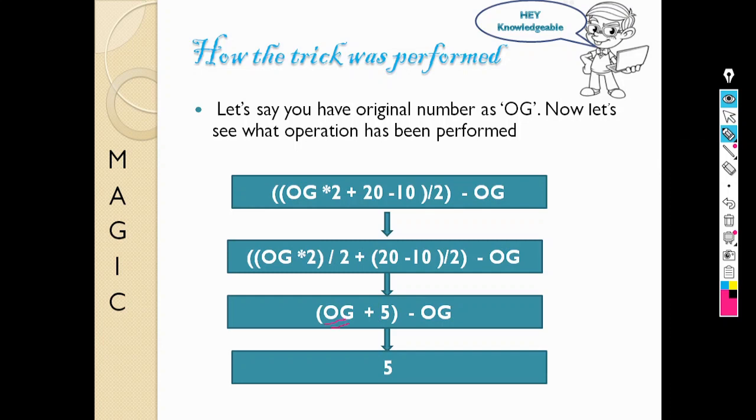So the trick is basically you have to do operations in such a way that the original number gets cancelled automatically. And then whatever the rest of the things which you have told, you have to know the answer of that and reveal at the end. That's how the trick was performed.